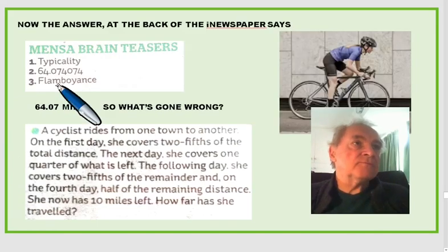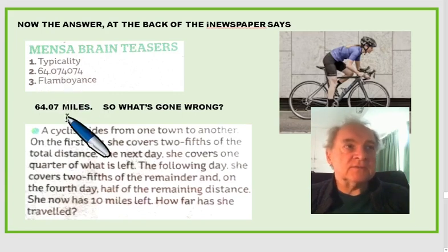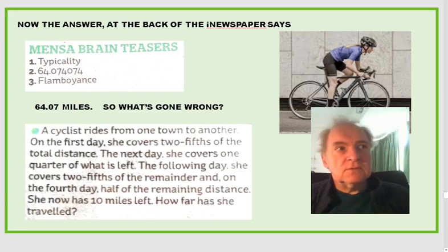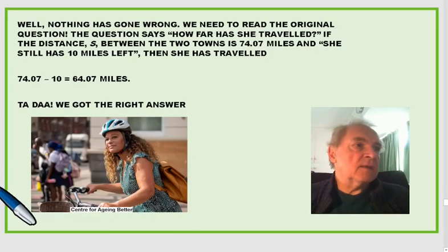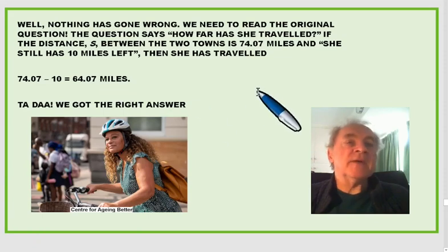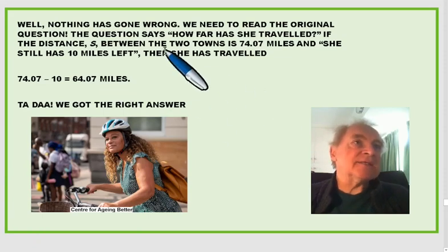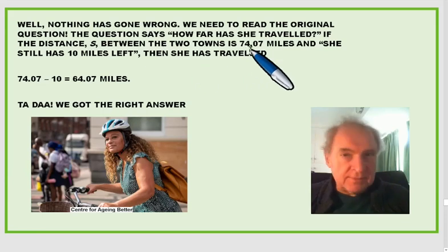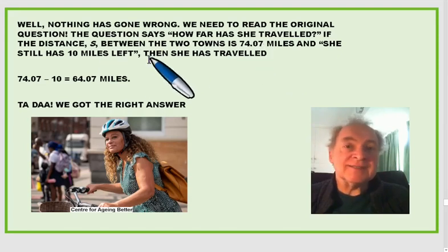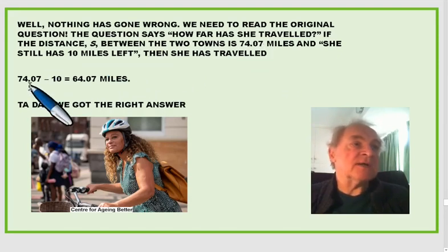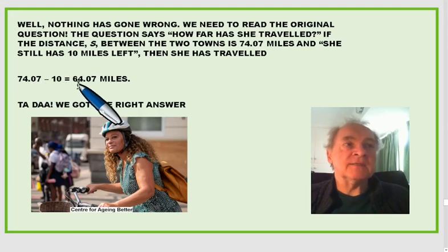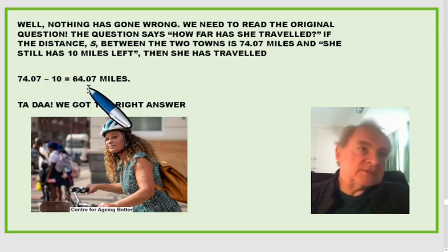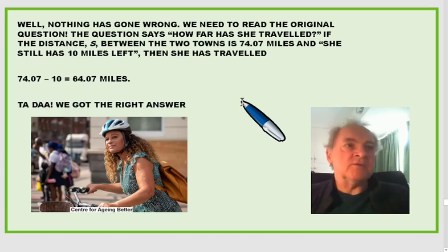The answer at the back of the newspaper says sixty-four point zero seven miles. So what's gone wrong? Well, the answer is nothing's gone wrong — we didn't read the question properly. It says how far she travelled. If the total distance s is seventy-four point zero seven miles and she still has ten miles left, she has travelled seventy-four point zero seven minus ten, which is sixty-four point zero seven miles. Ta-da! We got the answer right.